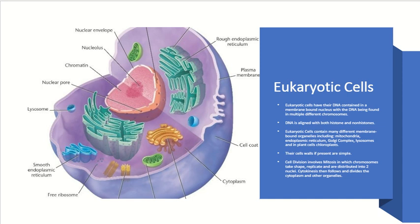Eukaryotic cells have their DNA protected and enclosed in a nuclear membrane, which forms the nucleus. DNA can be found in multiple different chromosomes instead of just one single circular chromosome like in prokaryotes. The DNA is aligned through molecules called histones and non-histones. Eukaryotic cells contain many different membrane-bound organelles that have specific functions, such as mitochondria and the endoplasmic reticulum, as well as many more.